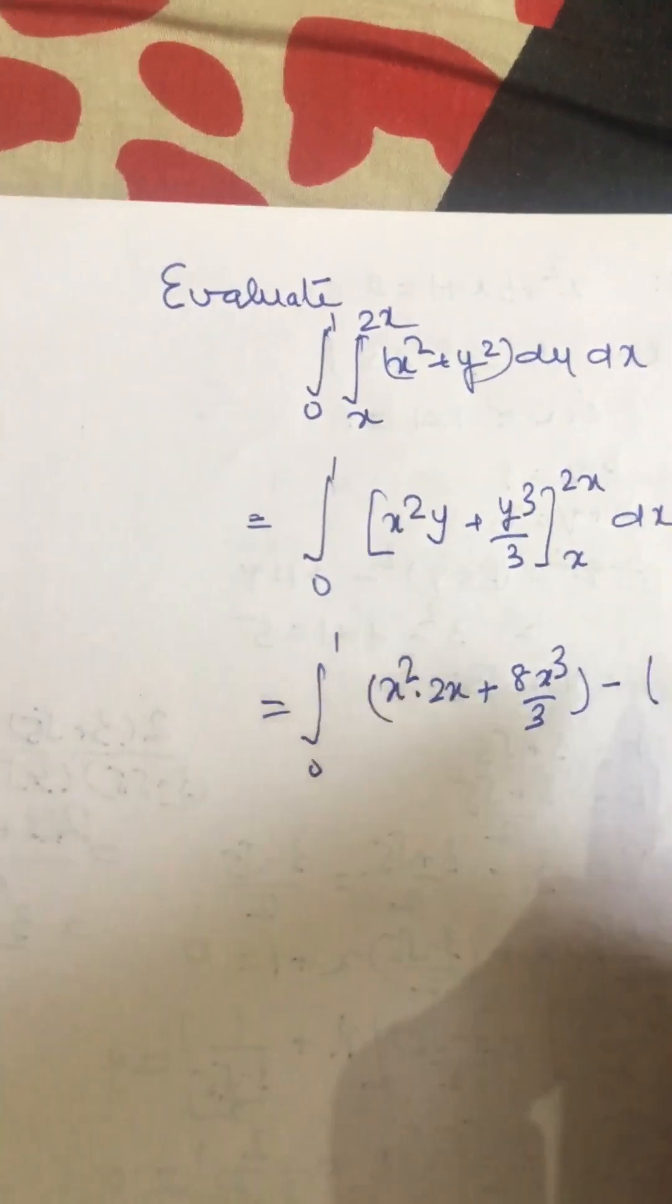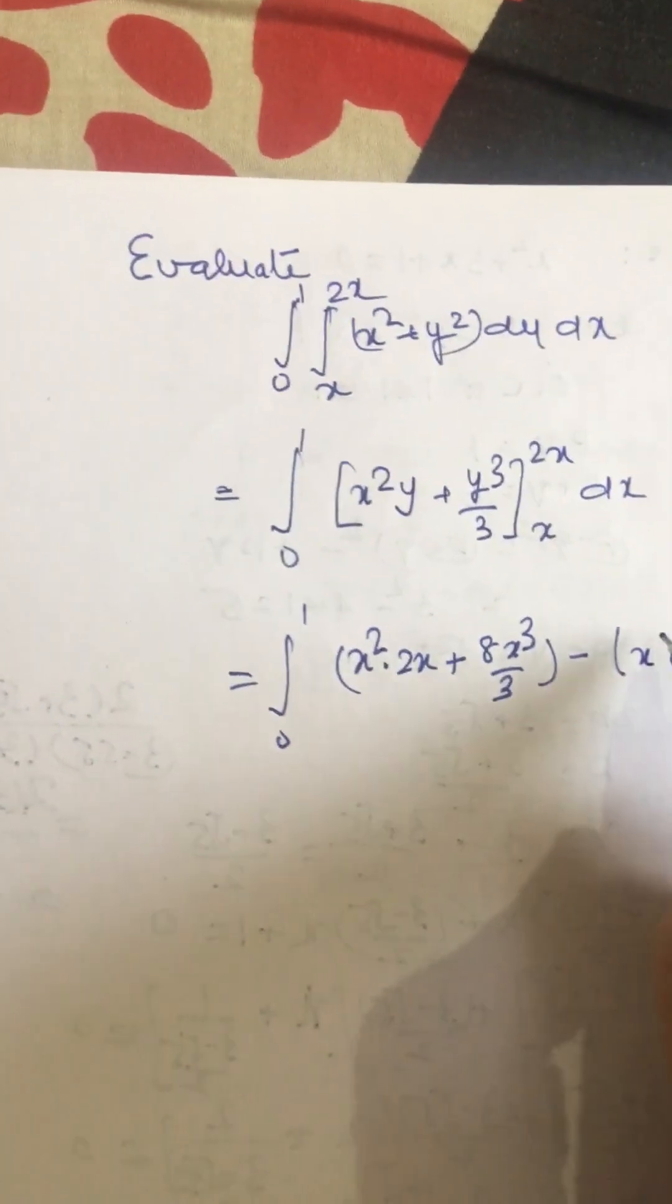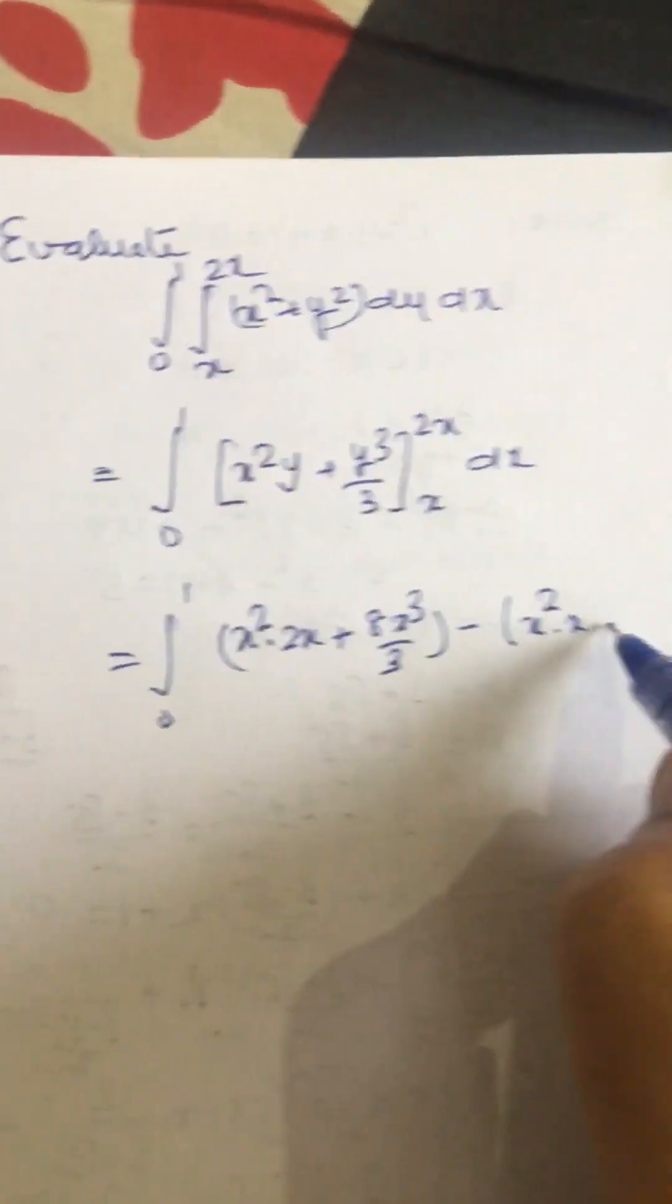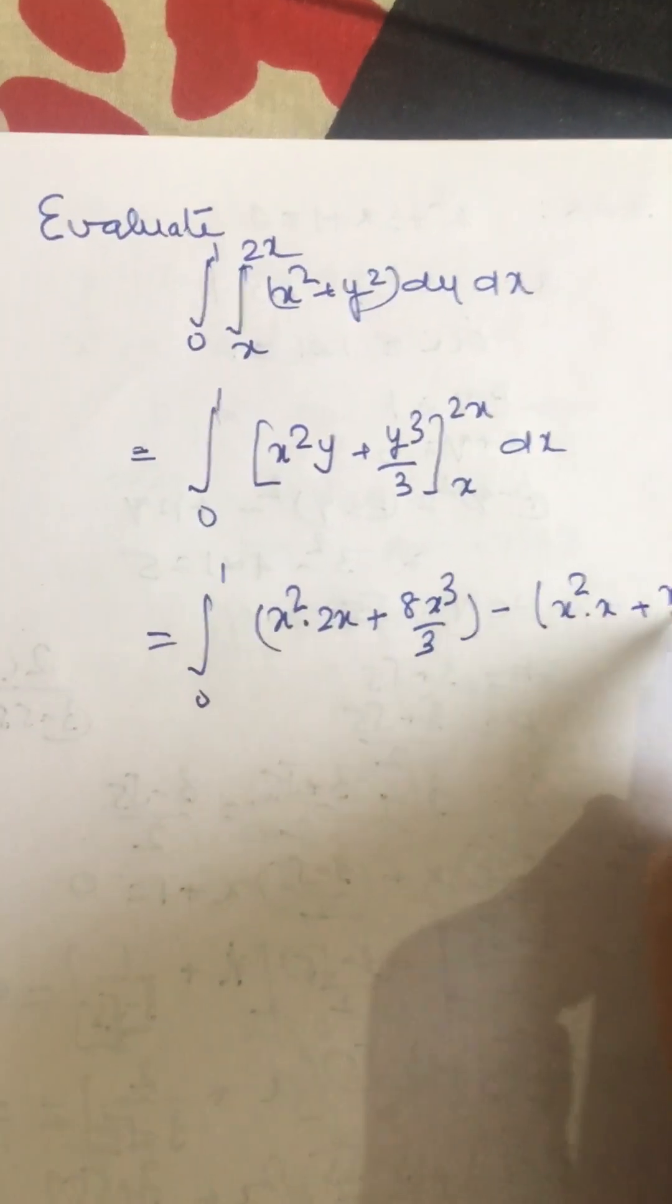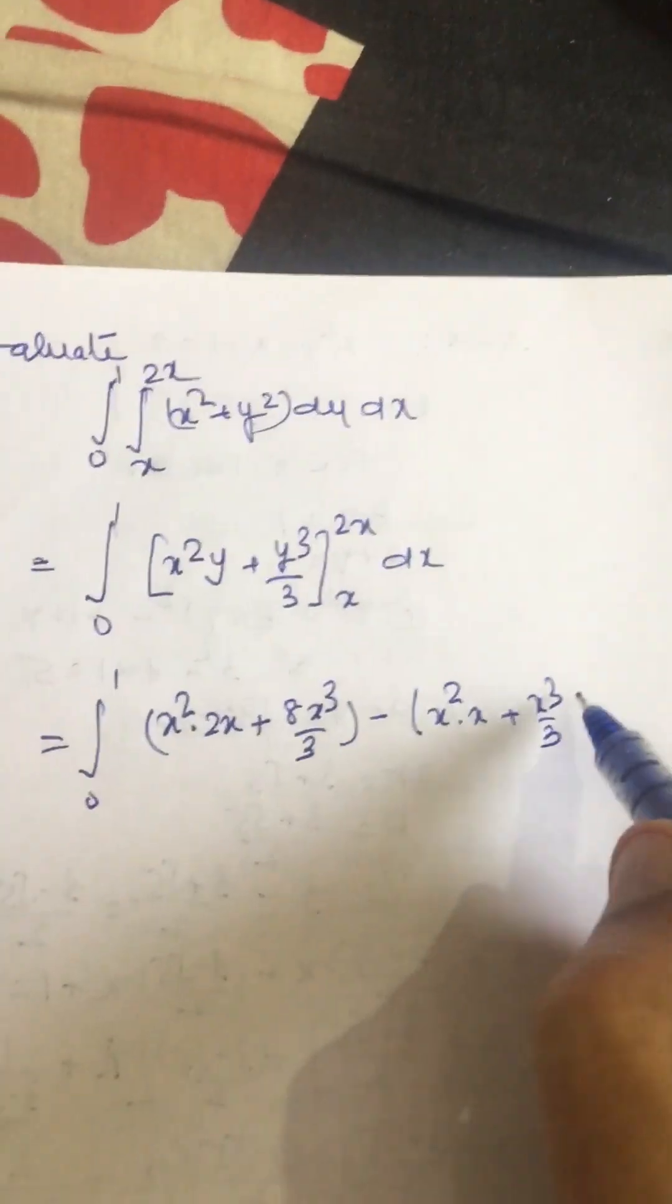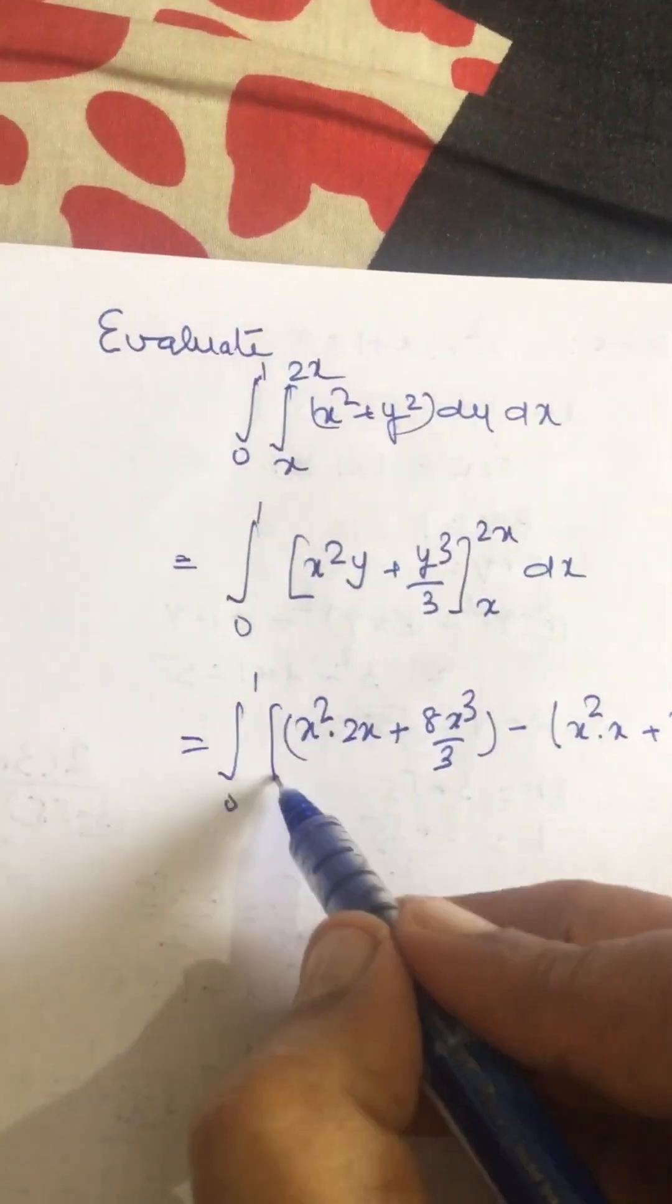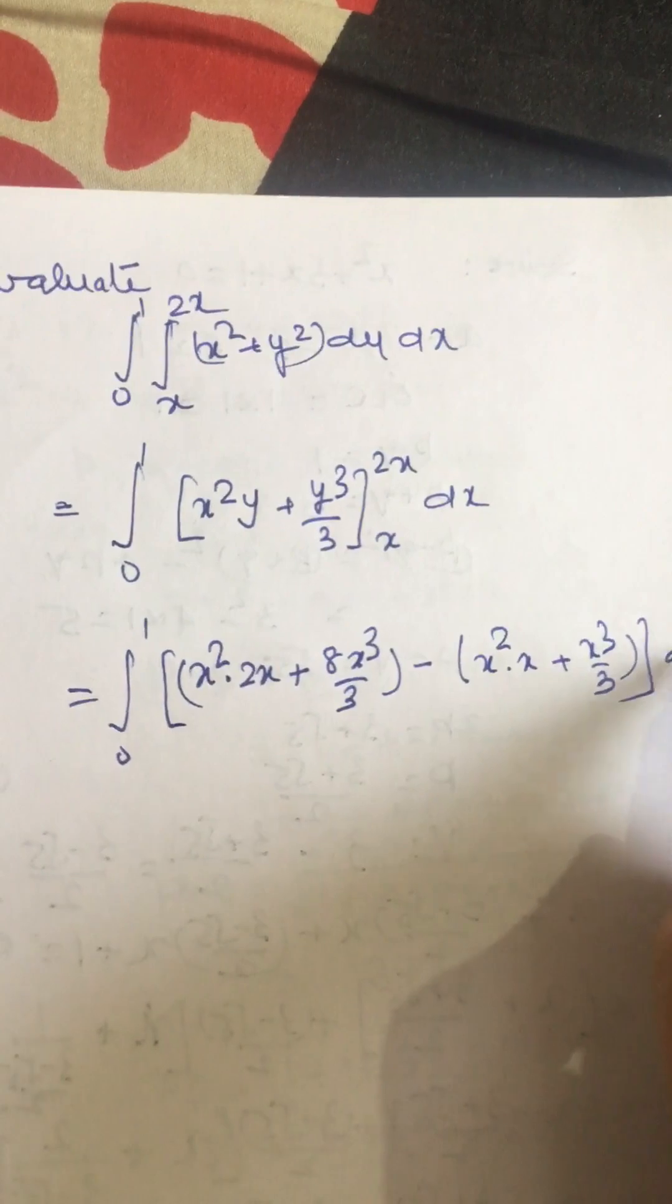And minus, this is x square x plus x cube by 3, and this is to be integrated with respect to x.